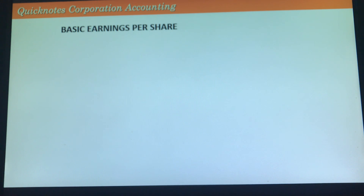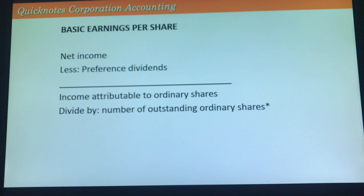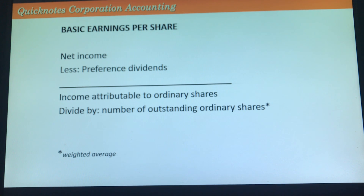For basic earnings per share, start with net income, deduct preference dividends, and that gives income attributable to ordinary shares. Divide by the number of outstanding ordinary shares to get basic EPS. In higher or intermediate accounting, the weighted average number of outstanding ordinary shares is used; but for basic accounting, we simply divide by outstanding ordinary shares. When there is no change in the number of outstanding ordinary shares, this is also the weighted average.